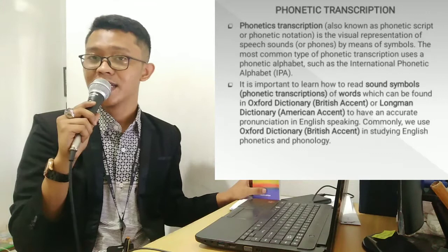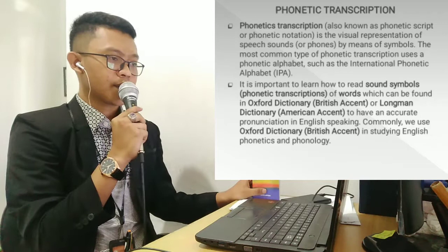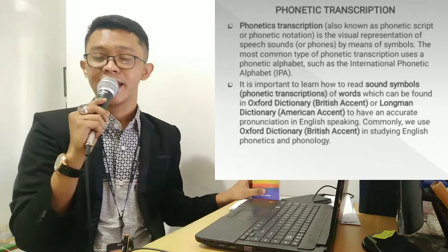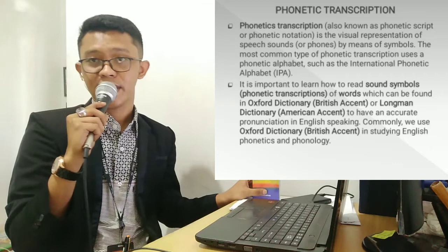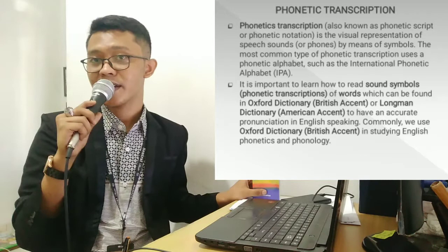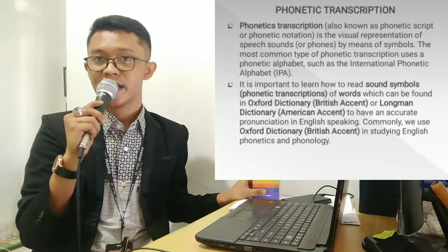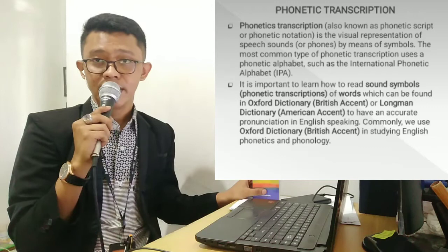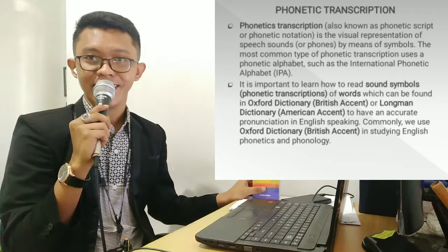Terkait dengan sound simbol atau phonetics transcription dari kata, dapat kita temukan dengan mudah di kamus Oxford untuk British style, dan untuk American style dapat ditemukan pada kamus Longman. Ketika kita berbicara tentang phonetics transcription, terdapat banyak perbedaan berdasarkan accent atau logat. Ada Canadian English, Australian, American, dan British — namun yang dijadikan standar internasional lazimnya adalah British dan American. Dalam pembelajaran English phonetics dan phonology dengan saya, umumnya kita menggunakan acuan British atau Oxford dictionary.